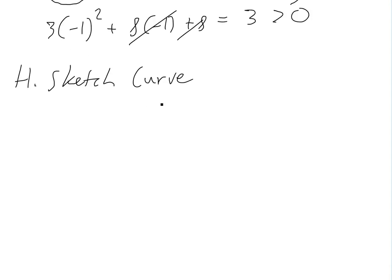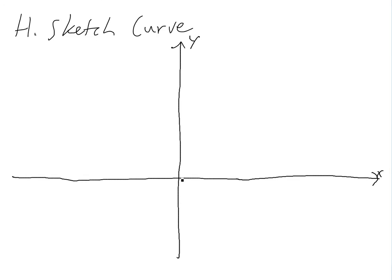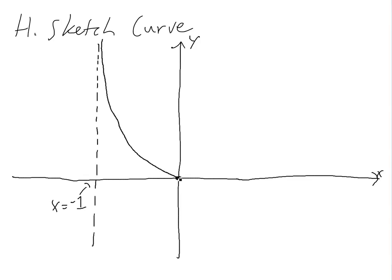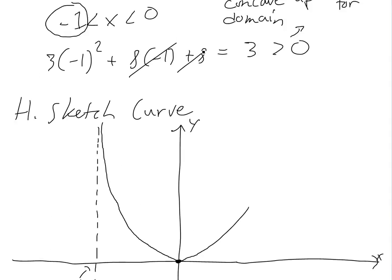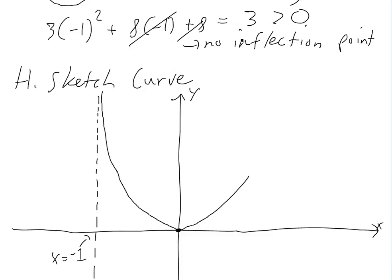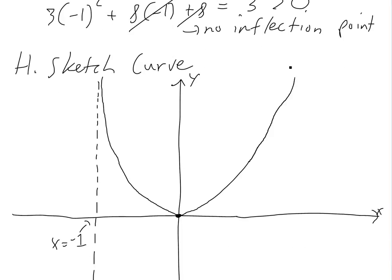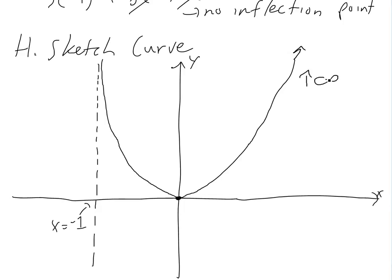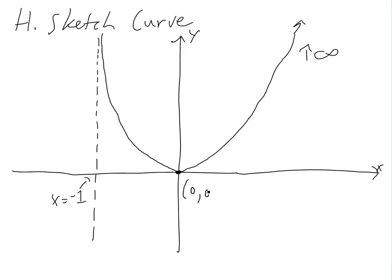Putting all the information together to sketch the curve: we draw x and y axes. The intercept is at (0, 0), which is also the local minimum. There's a vertical asymptote at x equals negative one. The limit goes to infinity as x approaches negative one from the right, and the curve goes up toward infinity as x increases. The function is concave up the entire way with no inflection point.